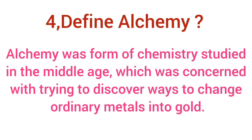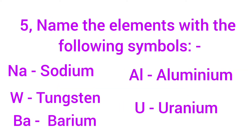Fourth question: define alchemy. Alchemy was a form of chemistry studied in the middle ages which was concerned with trying to discover ways to change ordinary metals into gold. Fifth question: name the elements with the following symbols - Na: Sodium, W: Tungsten, B: Boron, Al: Aluminium, U: Uranium.